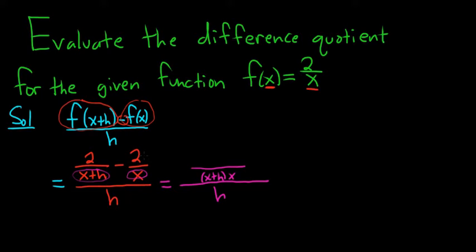And now when we do the subtraction, you just think, here it's going to be 2. And then you ask yourself, what's missing here to get the LCD? Well, we're missing the x. So x, and then minus, and then 2. And again, you ask yourself, what's missing here to get the LCD? So x plus h. All of this is in parentheses.